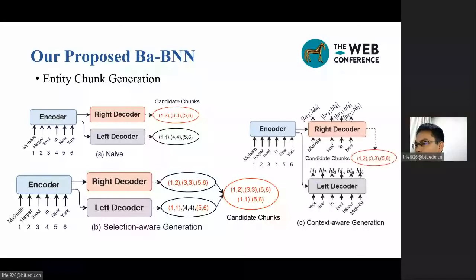Context-aware generation: in order to capture the contextual information, we concatenate the hidden states from HL to HR as a new hidden state to generate the entity trunk from the right decoder.